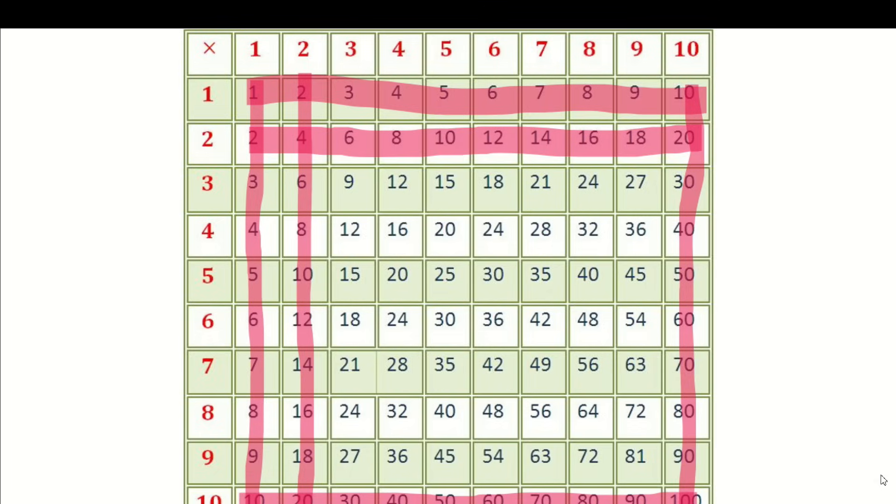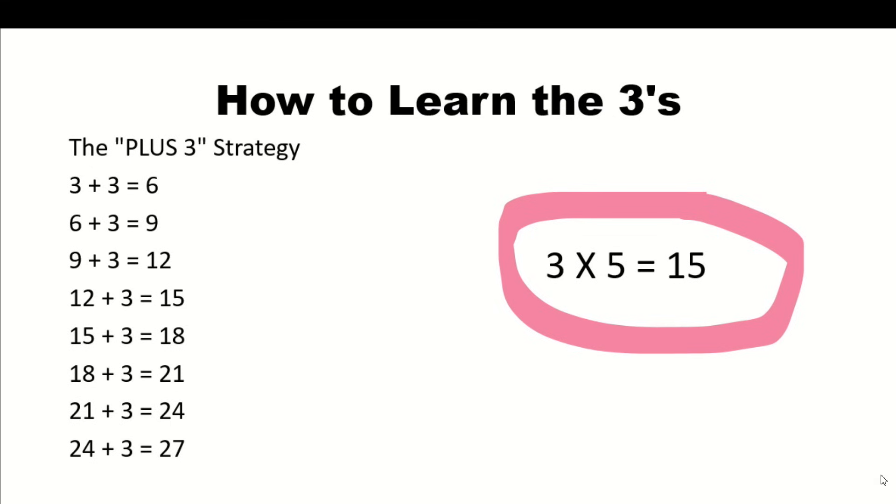Now we're down to a smaller square that we're trying to memorize. Now we're on to the threes. How would I teach a child to memorize the threes? I use the plus three strategy. So three plus three is six. Then I would say to the child plus three and they would say nine. Then plus three and they would say twelve. Plus three and they would say fifteen, eighteen, twenty-one, twenty-four, twenty-seven. Once you can get them to see the plus three strategy, you're just adding three to the last one. Have them understand it.